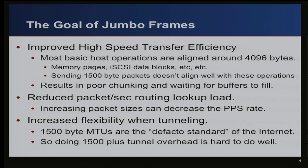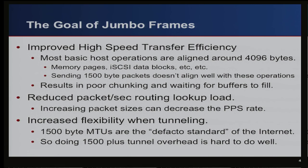There are three main goals of jumbo frames. The first is to improve high-speed transfer efficiency. Most CPUs and operating systems are not built around moving 1500-byte packets — they're built around moving data in at least 4096-byte block chunks, the size of a memory page or a disk block. When you break this down into 1500-byte packets, it doesn't align well, requiring more memory copies, more segmentation, and added load.